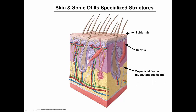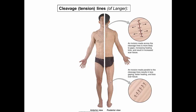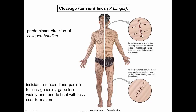Superficial fascia — subcutaneous tissue — is mostly composed of loose tissue and fat, and also contains sweat glands, superficial blood vessels, and lymphatics that send branches into the dermis to form vascular beds. Cutaneous nerves send fibers into the dermis and epidermis, where some have afferent sensory receptors important for pain, temperature, and touch, while other fibers innervate sweat glands with sympathetic motor fibers. Deep fascia lies beneath all superficial fascia and covers skeletal muscle tissue. The cleavage lines or tension lines of Langer are determined by the direction of collagen bundles in the skin — incisions parallel to these lines gape less and heal with less scar formation than perpendicular incisions.